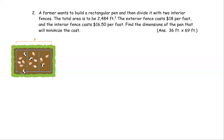For this problem, a farmer wants to build a rectangular pen and then divide it with two interior fences. The total area should be 2,484 square feet. The exterior fence costs $18 per foot and the interior fence costs $16.50 per foot. Find the dimensions of the pen that will minimize the cost.